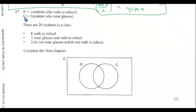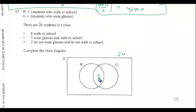Question 17. W equals a student who walks to school; G equals a student who wears glasses. There are 20 students in a class, so the universal set is 20. Three wear glasses and walk to school, so the intersection of the two sets is 3. Two do not wear glasses and do not walk to school — they will be outside the two sets but part of the population, so you put 2 there.